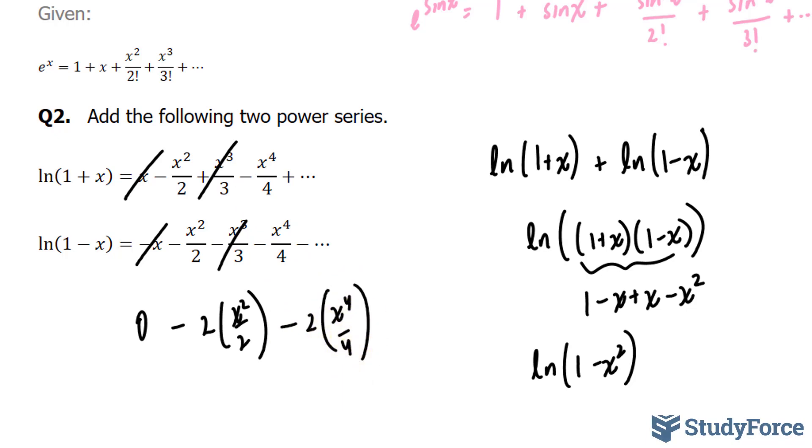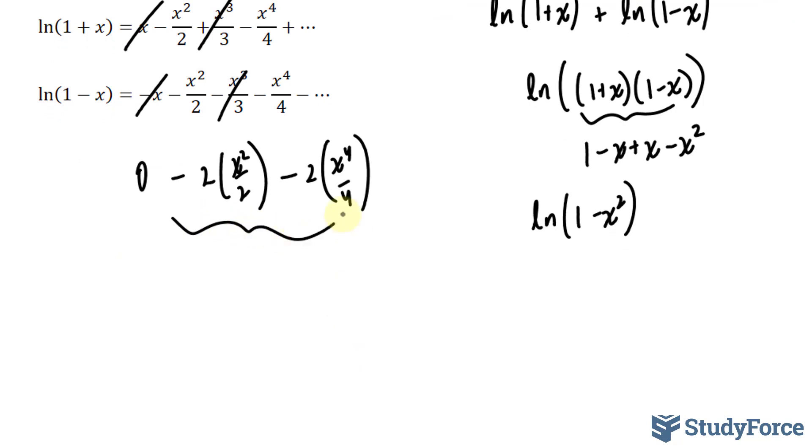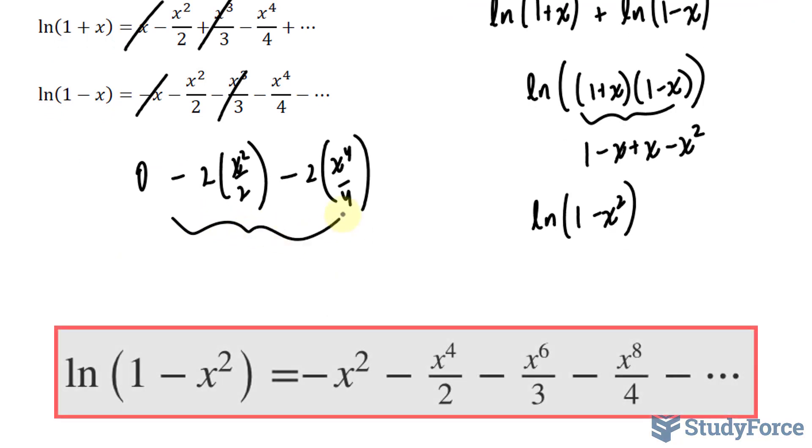Now, it turns out that what we just found here is the power series for ln(1 - x²). Take a look on your screen. That is the power series for ln(1 - x²). The only difference, and it's not a big difference, is that this has been reduced down to 1. This has been reduced down to over 2, minus everything else.